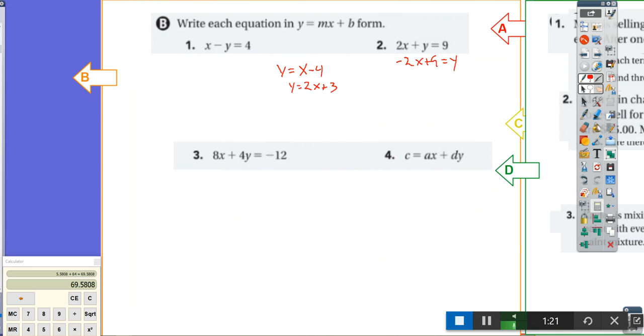So what's the first step in this problem? What are we going to do? Adam? You can subtract 8x. So let's subtract 8x. We get 4y is equal to negative 12 minus 8x. What's my next step?